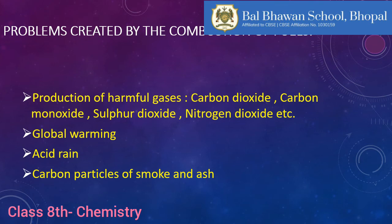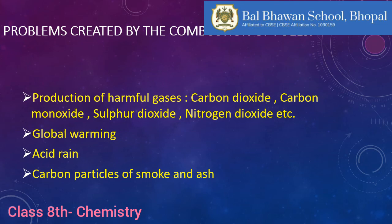Sulfur dioxide and nitrogen dioxide when present in the atmosphere react with rainwater to produce sulfurous acid and nitric acid. When these acids mix in rainwater, such rain is known as acid rain. Acid rain is harmful to mankind — it damages monuments, reduces the fertility of soil, causes skin problems, and harms plants.